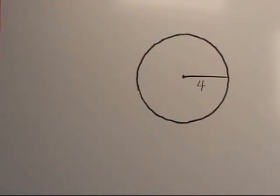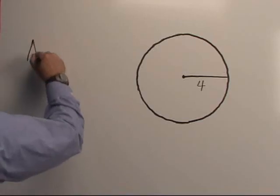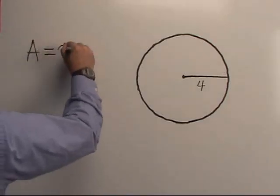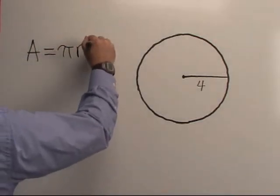Let's walk through calculating the area of a circle that has a radius of 4. We know the equation for the area of a circle is area equals pi r squared.